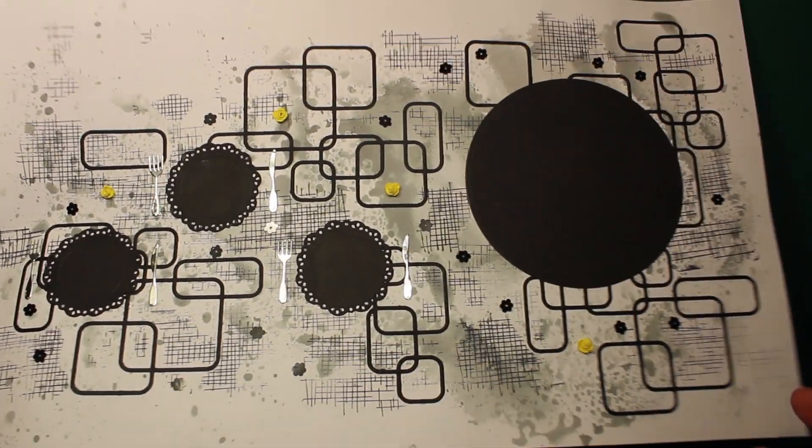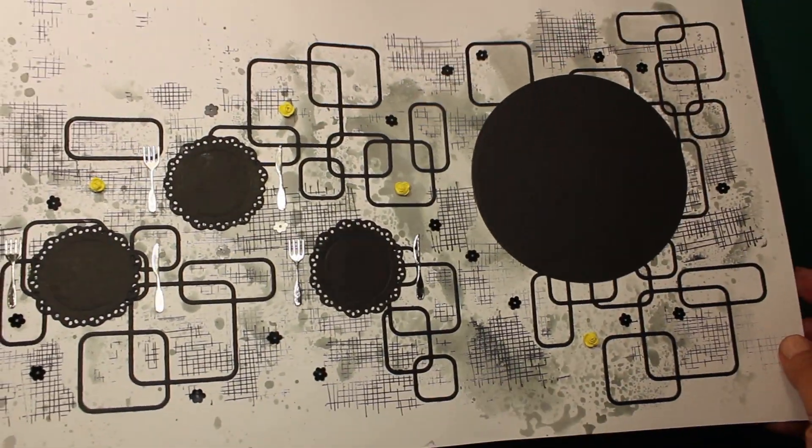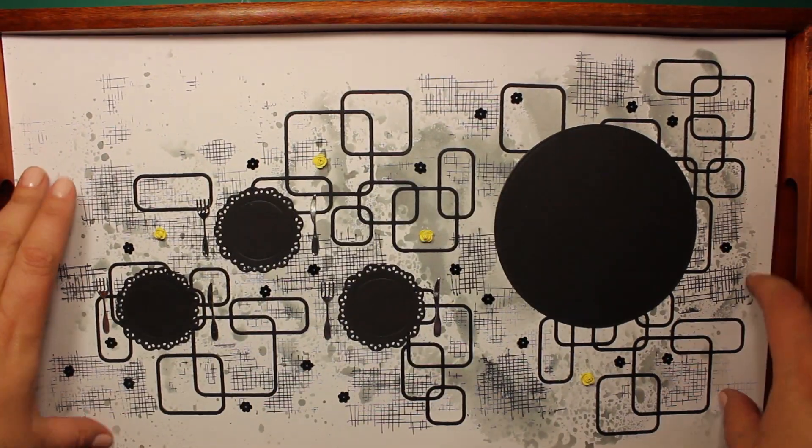You can see how the sequins and the cutlery are twinkling. Now the mat is finished and I can place it into the tray.